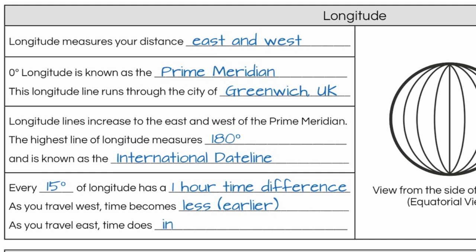As you travel east, time does increase or get later. As you travel 15 degrees of longitude to the east, it's going to get one hour later. And this is the basis of our system of time zones. They're all based on longitude lines.